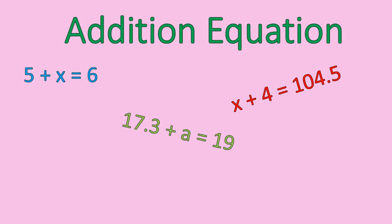Let's look at addition equations. Here are some examples of addition equations. They're equations that have a variable, an operation, and numbers, and addition. All of these have addition in them. 7 plus n equals 13. 5 plus x equals 6. 17.3 plus a equals 19. x plus 4 equals 104.5. These are examples of addition equations that have addition in them and have a variable and numbers.